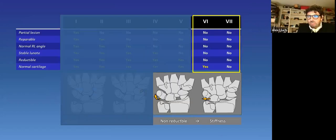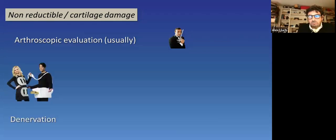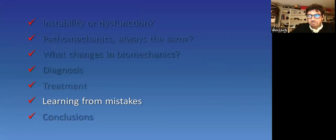In those situations, we cannot talk about instability anymore. It is collapse or arthrosis. What we do, we usually scope the joint. We see how the cartilage looks like. And we decide how aggressive we want to be with the so-called palliative techniques. We do denervation, arthroscopic synovectomy, styloidectomy, or we go for more aggressive techniques as proximal row carpectomy or partial fusions. And at last, but not least, what we have learned from our mistakes.